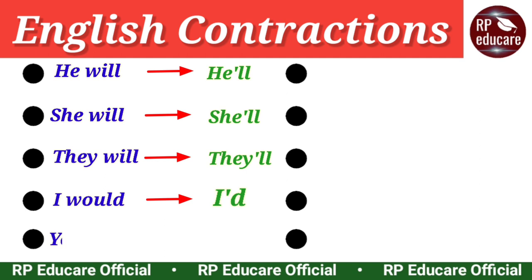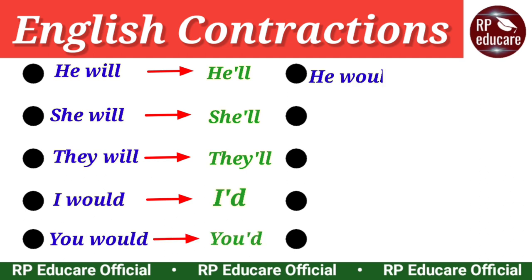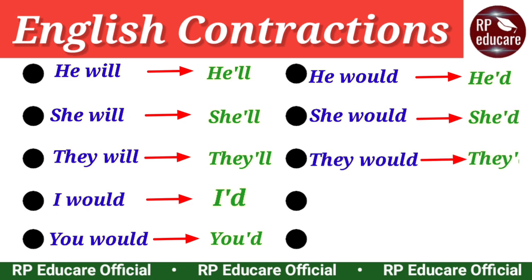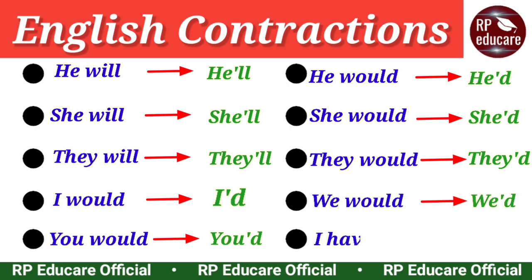I would - I'd. You would - you'd. He would - he'd. She would - she'd. They would - they'd. We would - we'd.